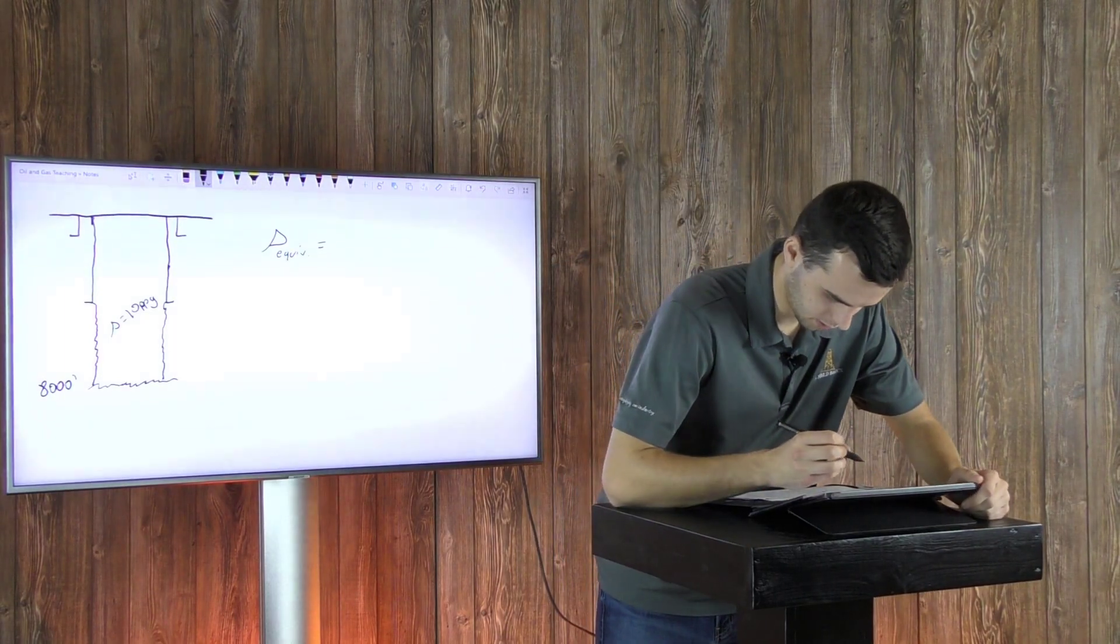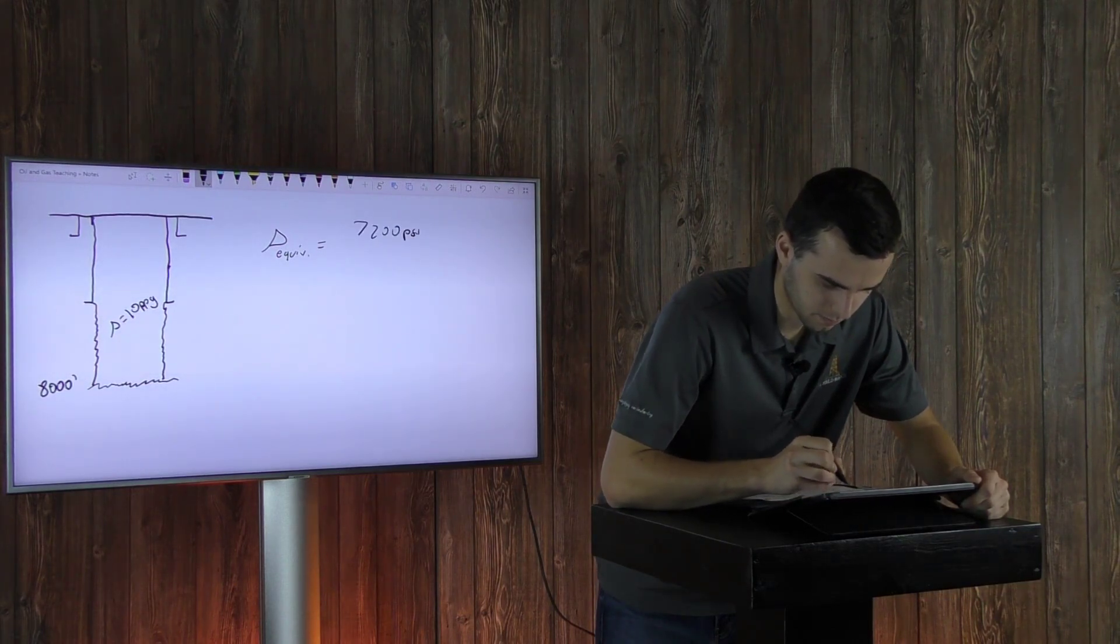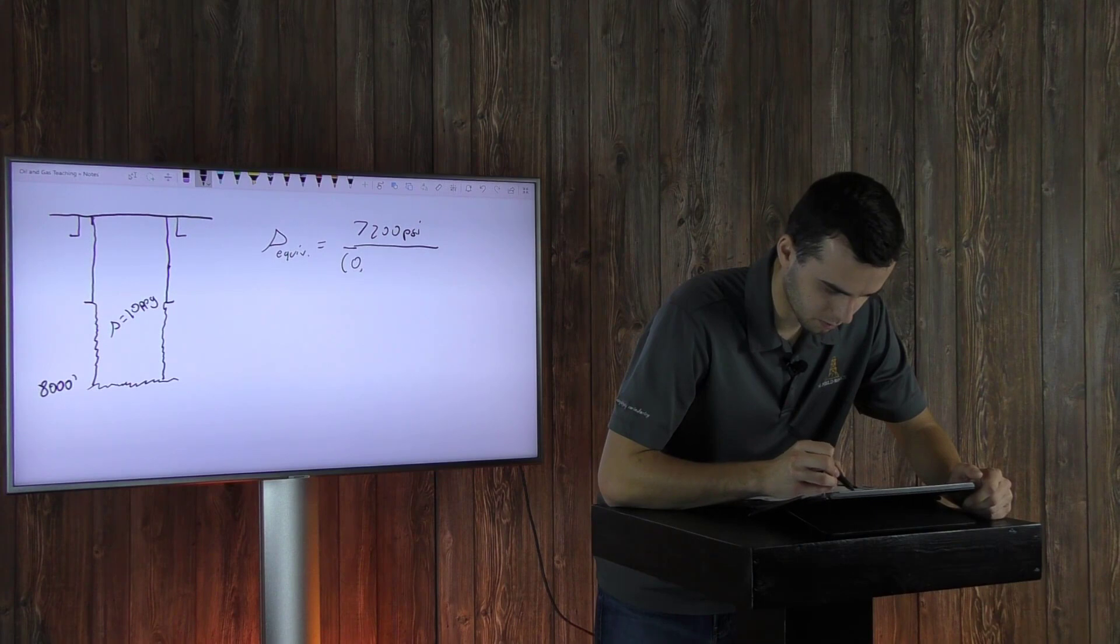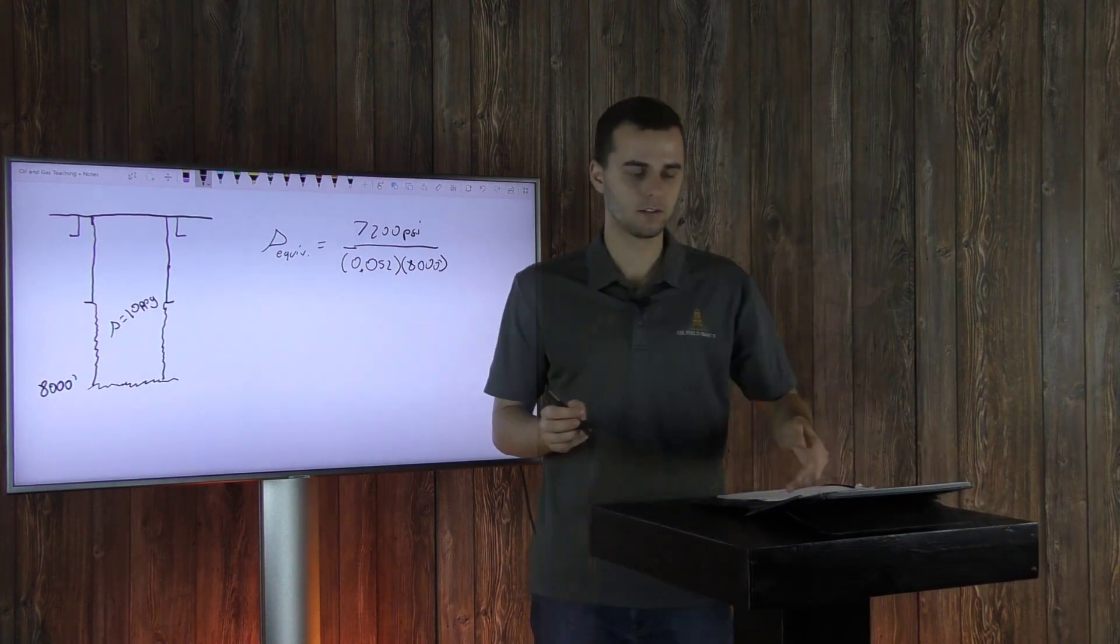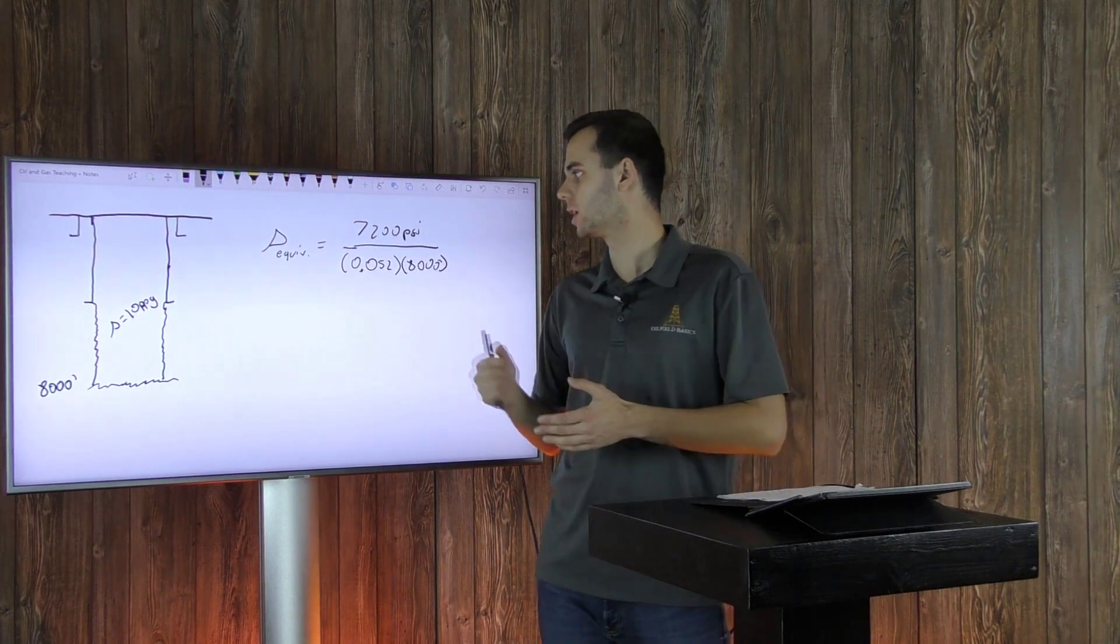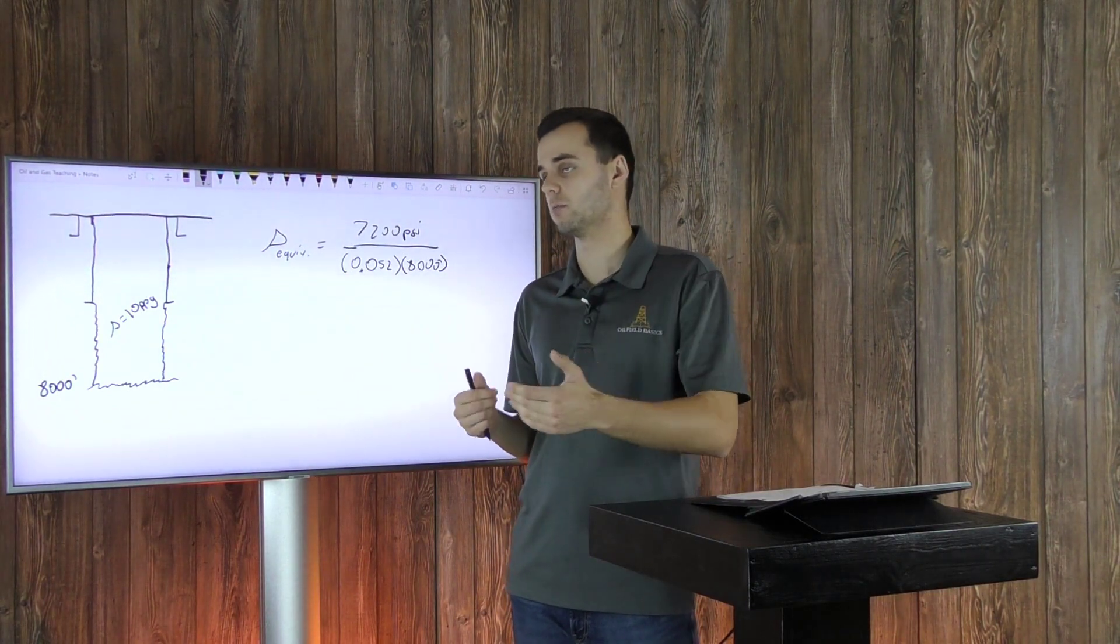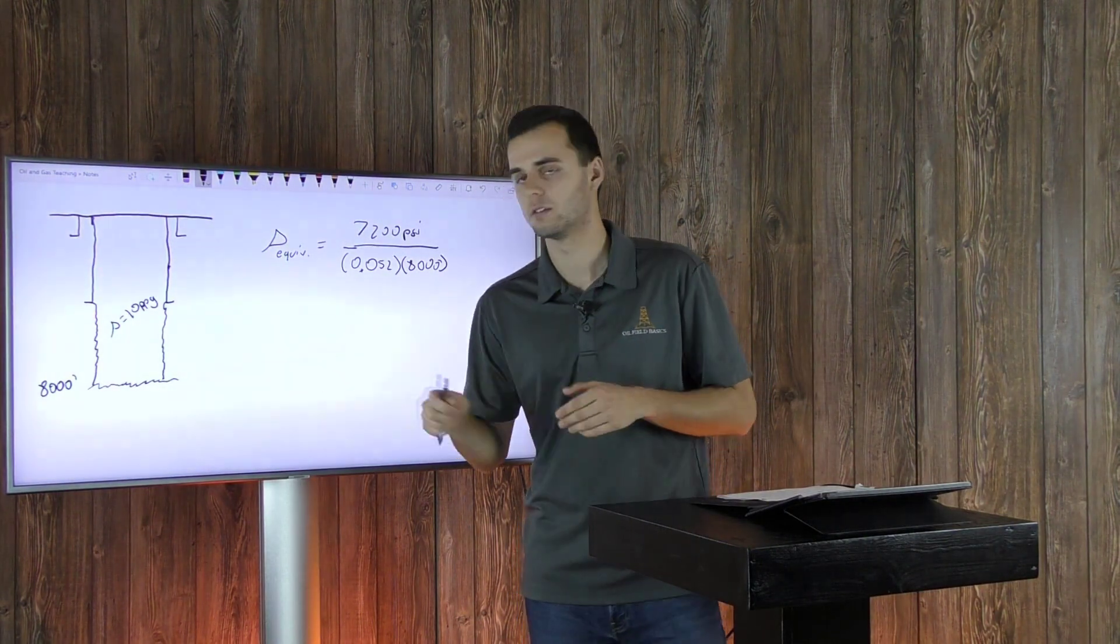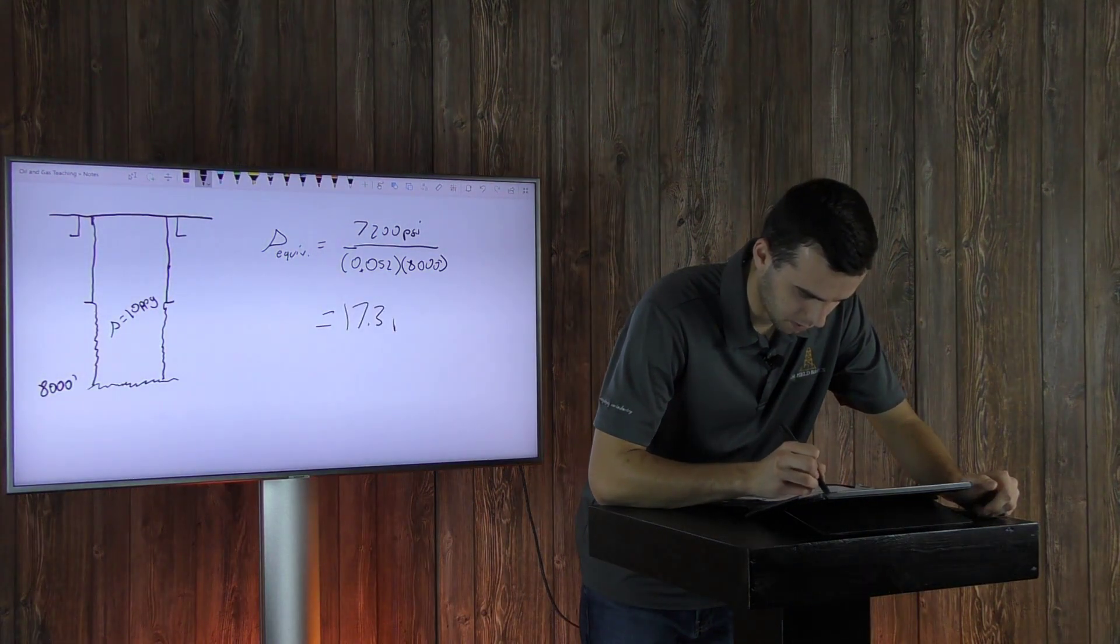Your equivalent mud weight density will be your 7,200 psi that we calculated before using our pressure gradients. That's divided by your constant of 0.052 times your 8,000 feet, which is where you're drilling at. And so as you can see here with this equation, your equivalent mud weight is your 7,200 psi, which is your max allowable pressure in order to not fracture the formation, divided by your constant of 0.052 times your 8,000 feet, which is where we're drilling at. And that equals a mud weight of 17.3 pounds per gallon.